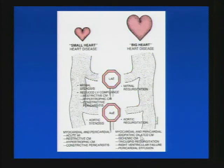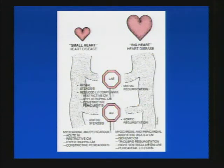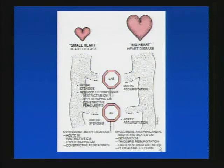Differential diagnoses for big heart without signposts include idiopathic dilated cardiomyopathy, ischemic cardiomyopathy, tricuspid regurgitation — that wall-to-wall heart — and right ventricular failure. A large pericardial effusion should also be included in the differential diagnosis.